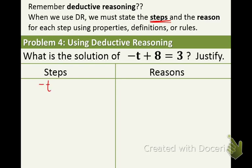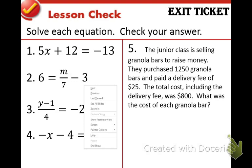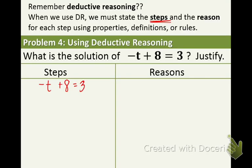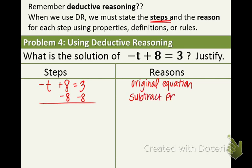We have the equation negative t plus 8 equals 3. And that is the original equation. Now, our first step is going to be getting rid of that plus 8. What's the opposite of plus 8? It's minus 8. Minus 8, minus 8 on both sides. Now, what property do we use? We use the subtraction property of equality. I'm going to abbreviate and you can do the same.